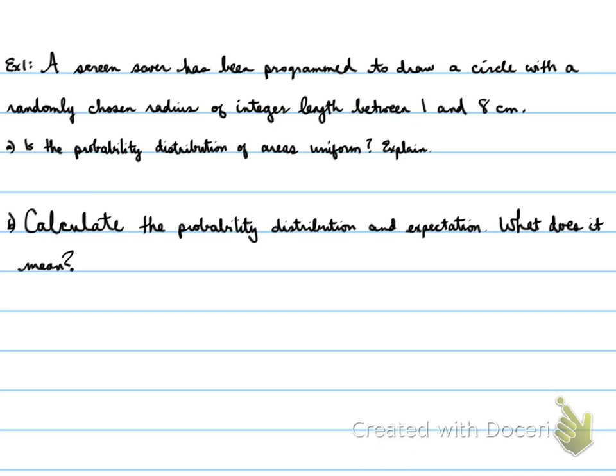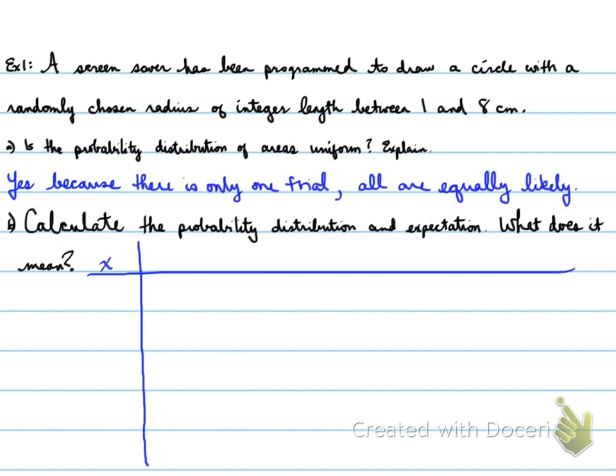So first part that says, is the probability distribution of areas uniform? To be uniform means that we're looking for one trial and all equally likely. So, yes, this is uniform because there is only one trial and all possibilities are equally likely.